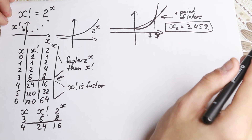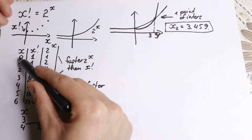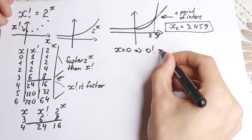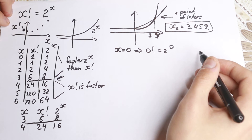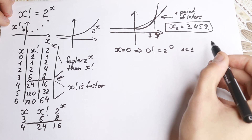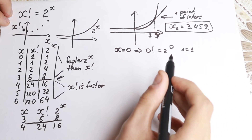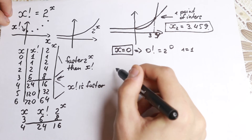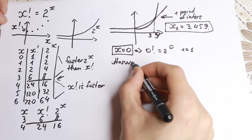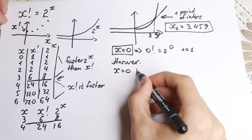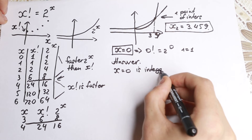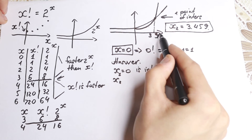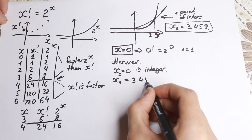But how can we find an integer solution? If we look closely, we can see that if x equals 0, we have 0 factorial equals 2 to the 0, which gives 1 equals 1 — absolutely correct. So x equals 0 is the first and only integer solution. For the non-integer solution, the point of intersection between 3 and 4 is approximately x equals 3.459, which I found using numerical libraries.